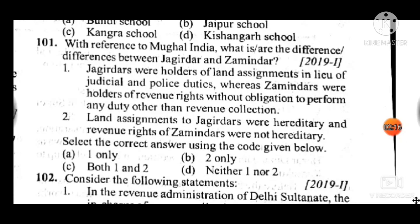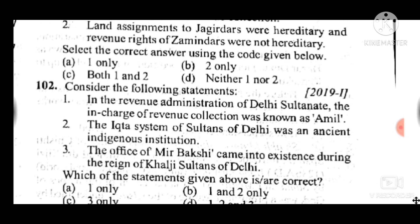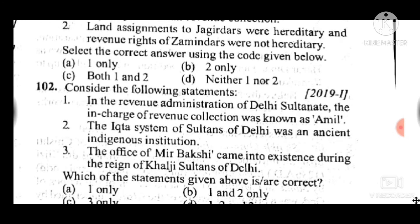Question 101: With reference to Mughal India, what are the differences between Jagirdars and Zamindars? Answer to question 101 is D: neither statement 1 nor statement 2 is correct. Question 102: Consider the following statements. Answer to question 102 is A: only statement 1 is correct; statements 2 and 3 are incorrect.